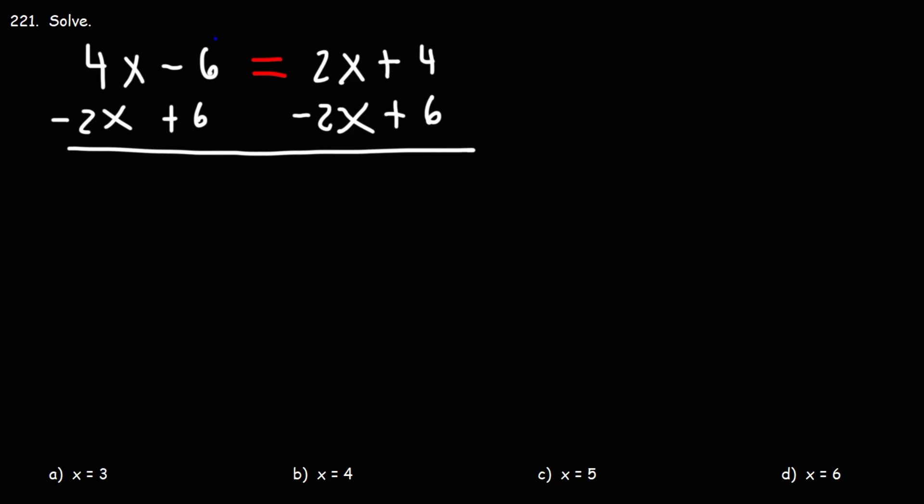Negative 6 plus 6 will cancel to 0. 2x and negative 2x will cancel. On the left, we have 4x minus 2x, which is 2x. On the right, 4 plus 6 is 10. So now we have the x variable on one side of the equation.